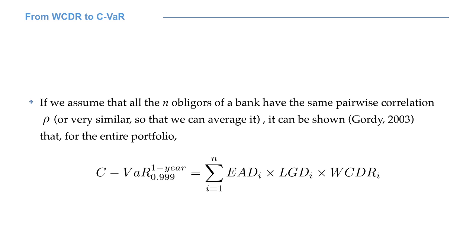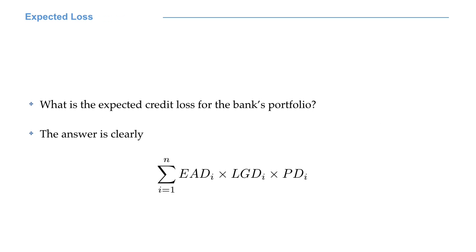That formula includes quantities we know, such as the exposure at default and the loss given default for each obligor i. Those quantities are usually defined using historical data, empirical studies, or for certain type of instruments, they are provided by the regulator.